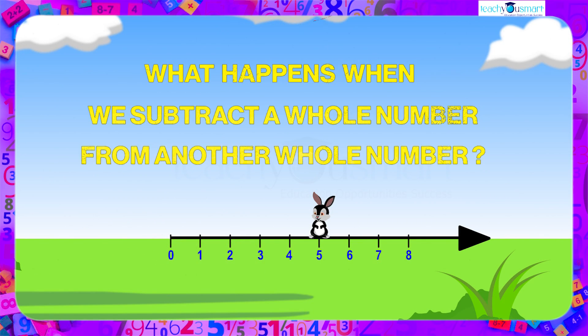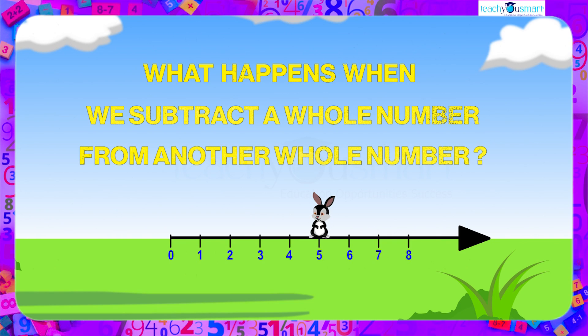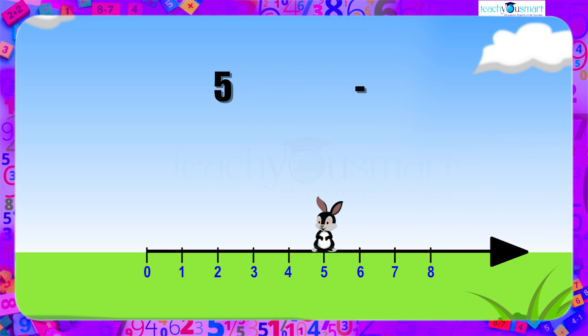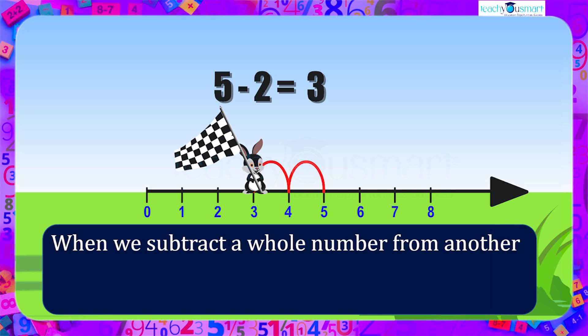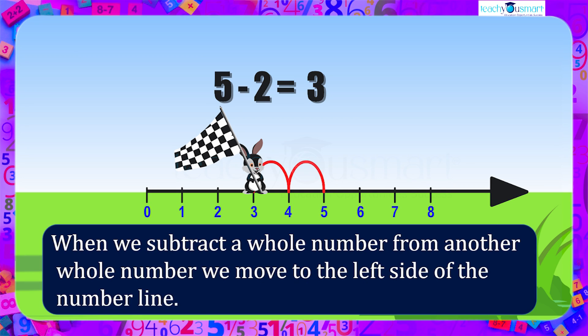What happens when we subtract a whole number from another whole number? When we subtract 2 from 5, we move 2 steps to the left of 5 and get 3. That is, when we subtract a whole number from another whole number, we move to the left side of the number line.